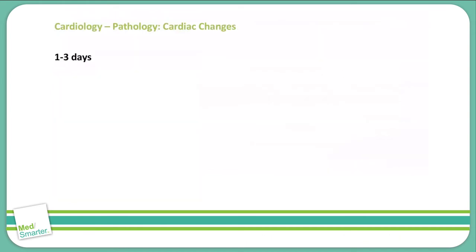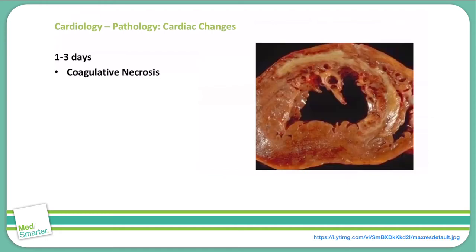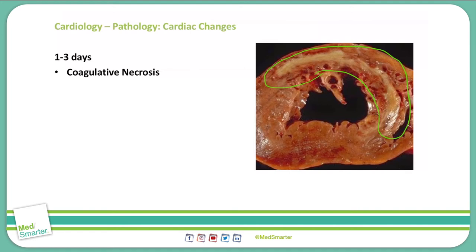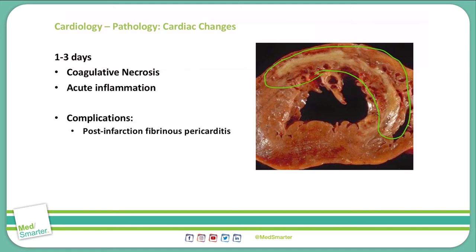The next time frame is 1-3 days post-myocardial infarction. At this point is when coagulative necrosis begins to set in. That dark mottling becomes full-blown necrosis, and you see here a large portion of the heart becomes yellow colored. We also see acute inflammation markers at this point in time. Complications that can be seen in the 1-3 day period include a post-infarction fibrinous pericarditis.